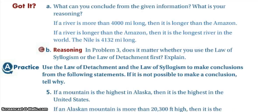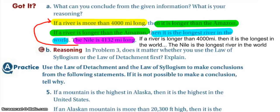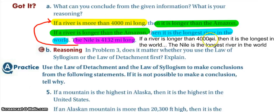Take a moment and look at the 'got it.' We're combining different statements and applying both laws. We're assuming all statements are true. First, using the law of syllogism: if a river is more than 4,000 miles long, then it is longer than the Amazon; if a river is longer than the Amazon, then it's the longest river in the world. So we conclude: if a river is more than 4,000 miles long, then it is the longest river in the world. Since the Nile is 4,132 miles long, we can conclude the Nile is the longest river in the world.